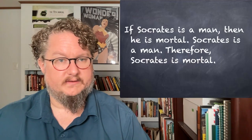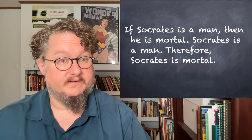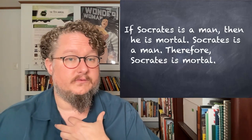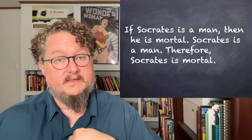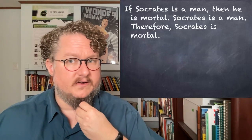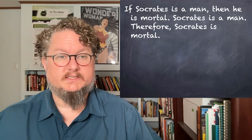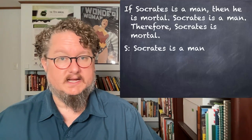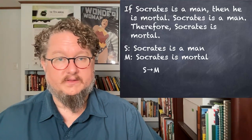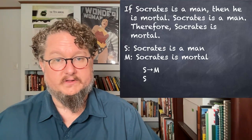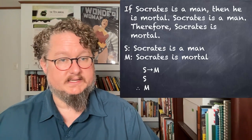Let's look at this argument. We can translate or symbolize not only sentences but arguments, and that's going to make a big difference as we think about the use of formal logic. 'If Socrates is a man, then he is mortal. Socrates is a man. Therefore, Socrates is mortal.' A very standard example. Using the symbolization key S for 'Socrates is a man' and M for 'Socrates is mortal,' we get: if S then M; S; therefore M. That's all symbolizing an argument involves.